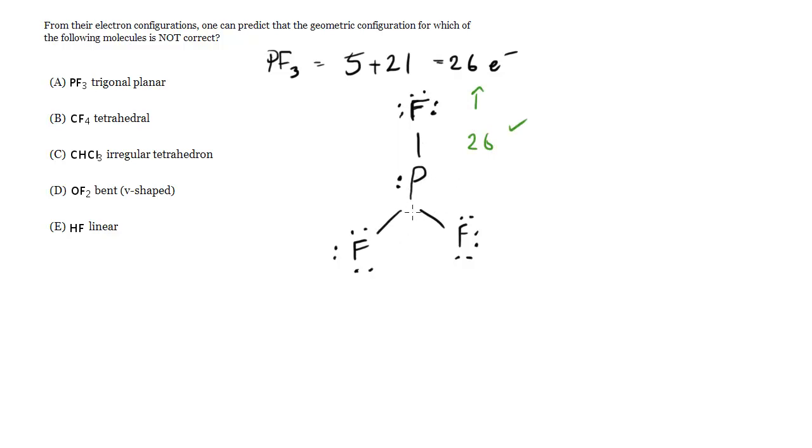Now what is the shape? Notice it has 3 bonds, but it has an unshared pair. So actually this is not the right picture for it because the unshared pair is going to push the F bonds down. And this is the trigonal pyramidal shape.